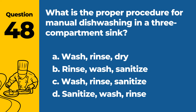Question 48. What is the proper procedure for manual dishwashing in a three-compartment sink? a. Wash, rinse, dry. b. Rinse, wash, sanitize. c. Wash, rinse, sanitize. d. Sanitize, wash, rinse. Answer: c. Wash, rinse, sanitize. This is the correct order for manual dishwashing in a three-compartment sink.